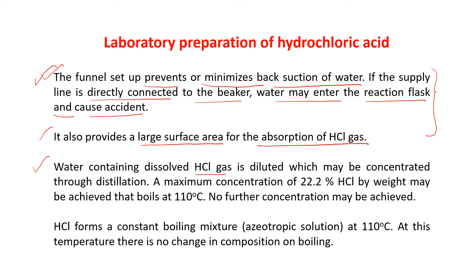Water containing dissolved HCl gas is diluted, but may be concentrated through distillation. A maximum concentration of 22.2% HCl by weight may be achieved, boiling at 110°C. No further concentration may be achieved, as HCl forms a constant boiling mixture — known as an azeotropic mixture — at 110°C.